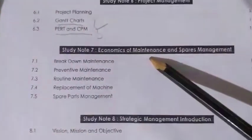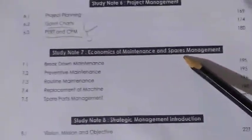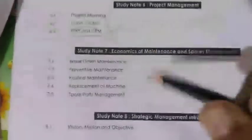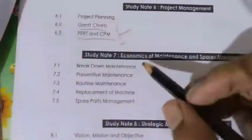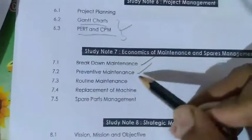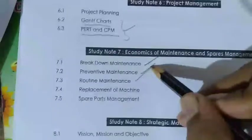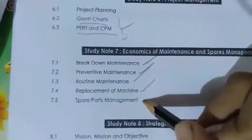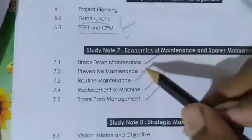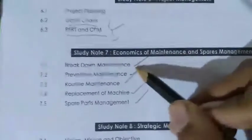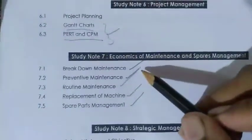Study note 7 covers Economics of Maintenance and Spare Management. This includes Breakdown Maintenance, Preventive Maintenance, Routine Maintenance, Replacement of Machine, and Spare Parts Management. Preventive Maintenance is a key question topic here.